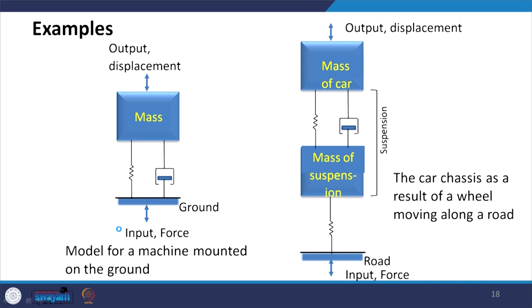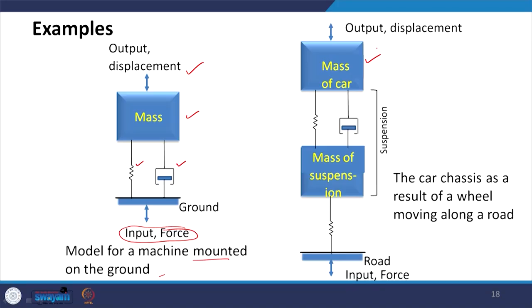We can take many other examples to model systems. For instance, a machine mounted on the ground can be modeled with a mass, spring, and damper with input forces from ground excitation and output displacement. Or for a car model: the mass of the car as a lumped mass, the suspension system modeled with a spring-damper, the mass of the suspension, and a tyre modeled as a spring. The input is excitation from the road and the output is displacement.